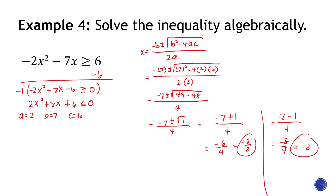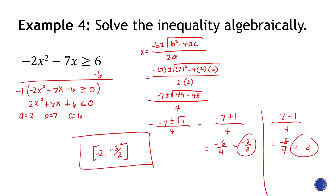Comparing the two values, negative 2 is less than negative 3 over 2, so the interval goes from negative 2 to negative 3 over 2. We use brackets here. That's how you solve quadratic inequality algebraically.